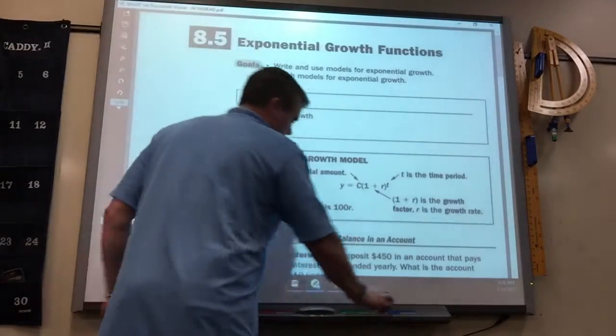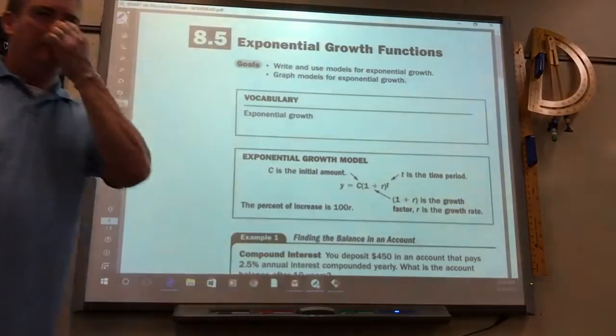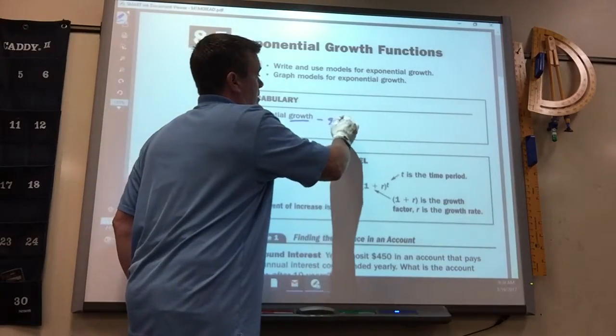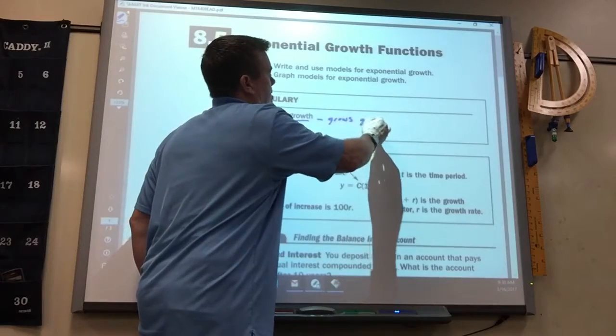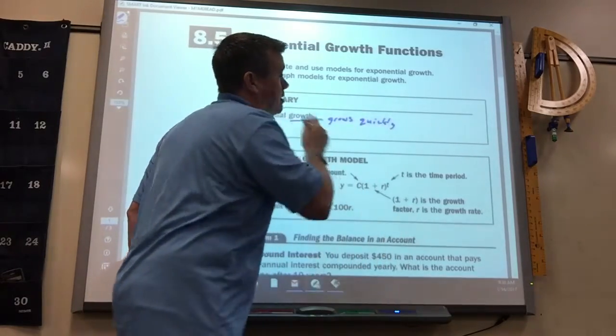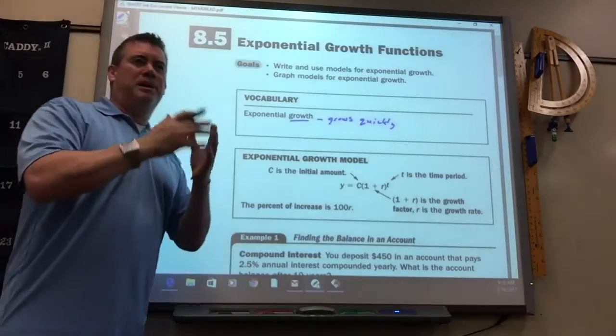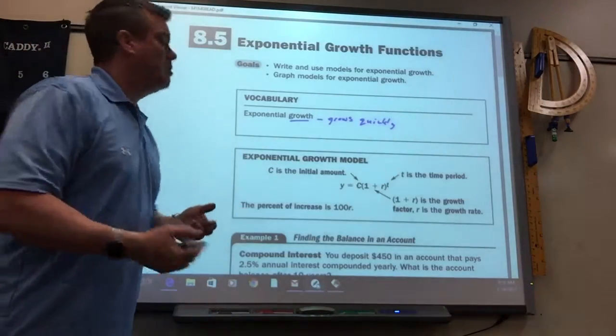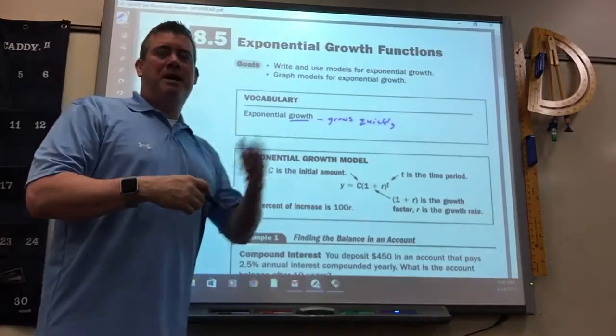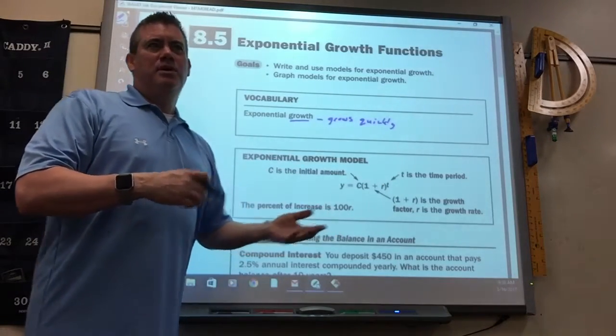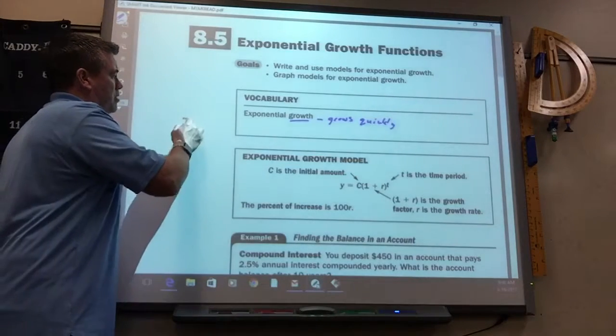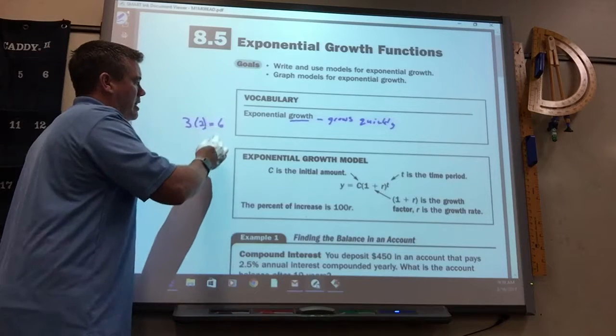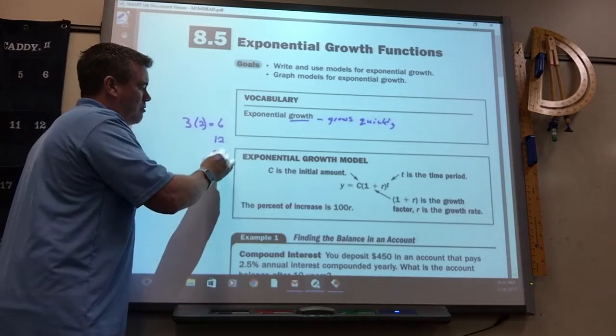Exponential growth - it grows quickly. It's different than linear. If something's a linear growth, then it just multiplies by the same number each time. Exponential, it goes up by a power each time. So if you take the number 3 and I multiply by 2, I get 6. Then I multiply that by 2, I get 12. By 2, you get 24.